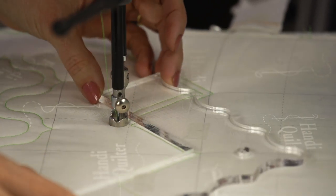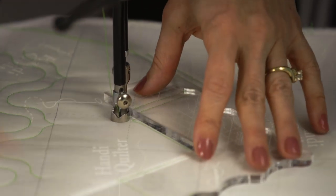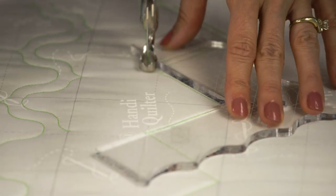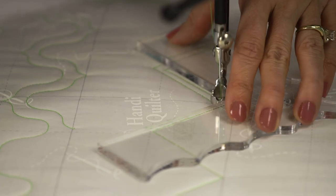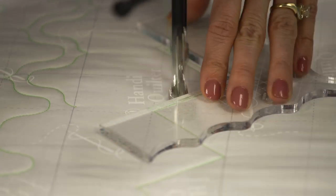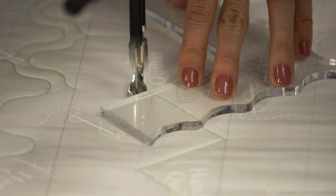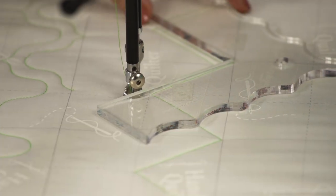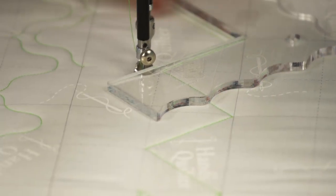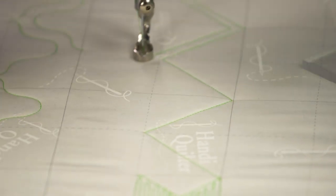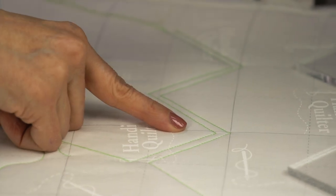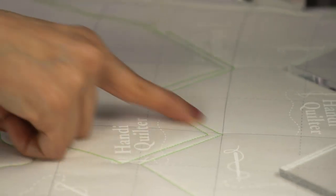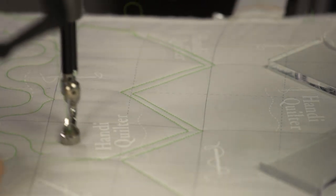Shifting the ruler over, lining it up with my previous stitching line. You want to make sure you always have control of your ruler. You'll notice I'm walking my fingers along to maintain that control. So let's move that out of the way so you can see. And again, you can make this lower down so that you have more of a gap in between, and play with it.